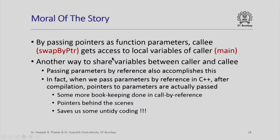The moral of the story is that by passing pointers as function parameters, the callee — swap_by_pointer — actually got access to the local variables of the caller, main. This is a way to share variables between caller and callee. We have also seen that we can pass parameters by reference to accomplish this. It is very interesting that when we pass parameters by reference in a C++ program, after compilation it is actually converted to passing pointers as parameters — that is how the callee gets access to variables in the calling function. It all happens through pointers, but those pointers act behind the scenes.